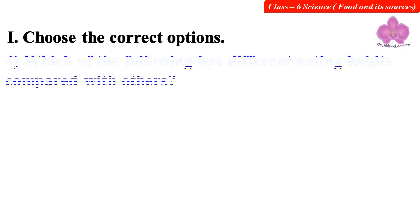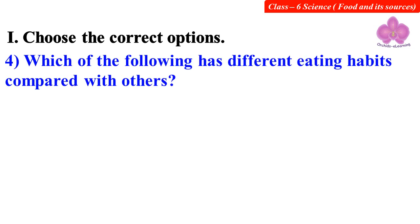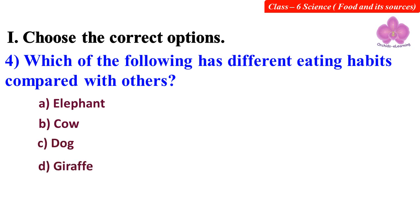Which of the following has different eating habits compared with the others? Option A: Elephant. Option B: Cow. Option C: Dog. Option D: Giraffe. Answer: C. Dog.